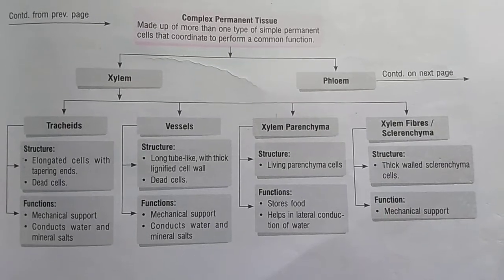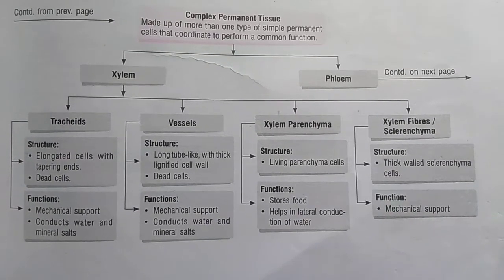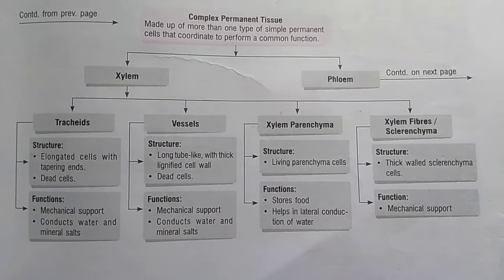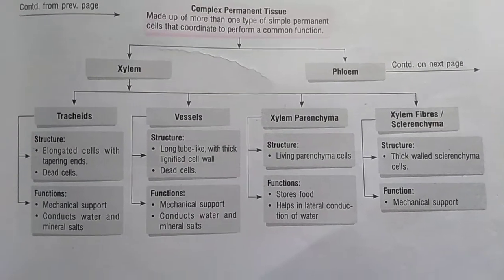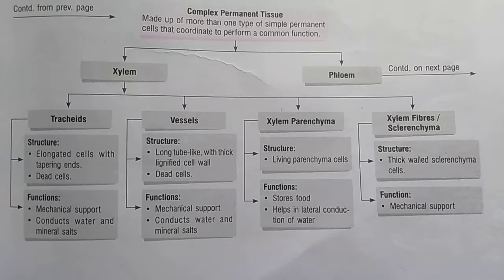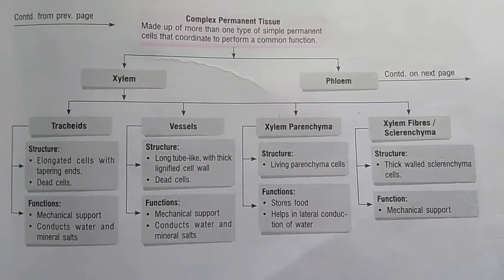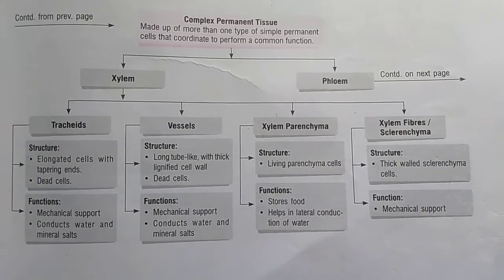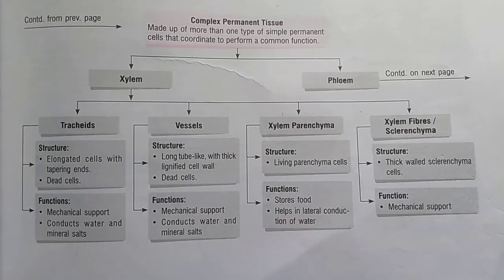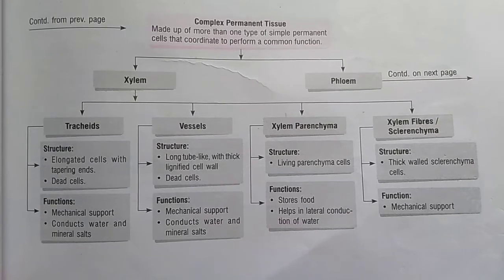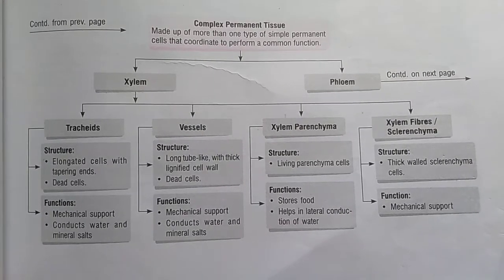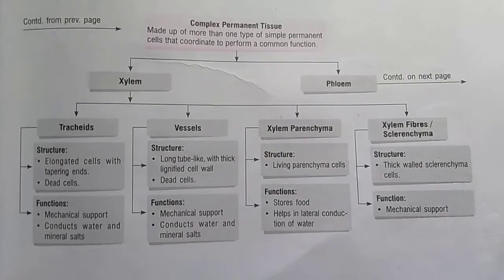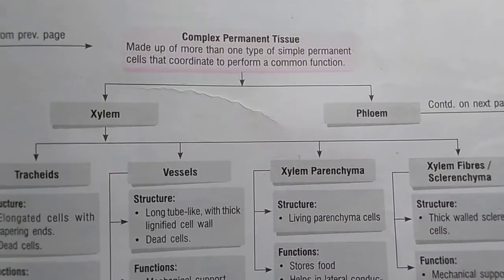Hello students, this is Sunita Mishra. We are studying the chapter Tissues, in which we studied simple permanent tissue — parenchyma, collenchyma, and sclerenchyma. Today we are going to learn about complex permanent tissue, which is made up of more than one type of simple permanent cells that coordinate to perform a common function.